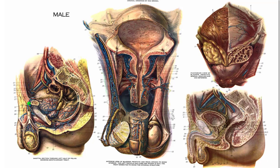The vas deferens continues through a passageway known as the inguinal canal that we see a little better in one of the other images. I'm going to follow the vas deferens around the lateral surface of the urinary bladder and back around to the back here.